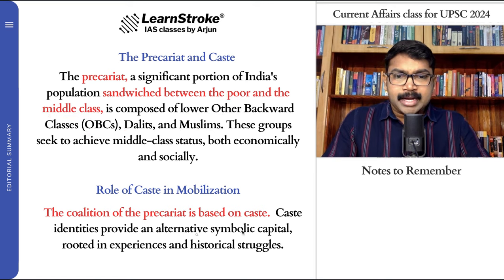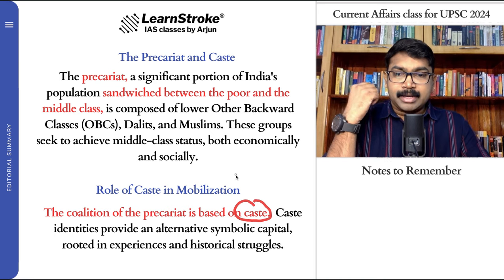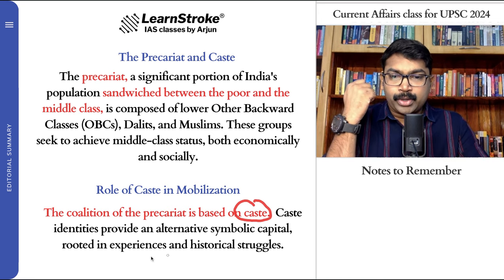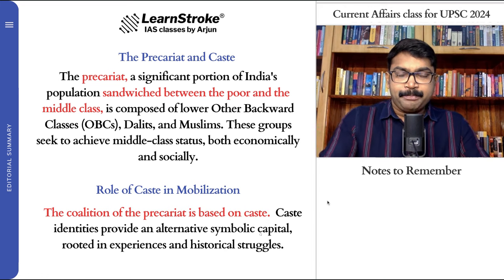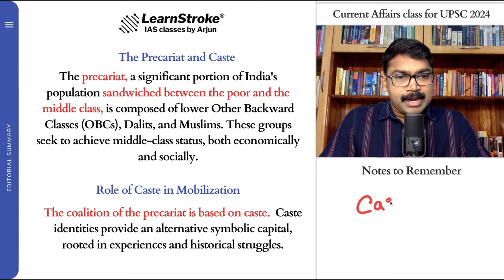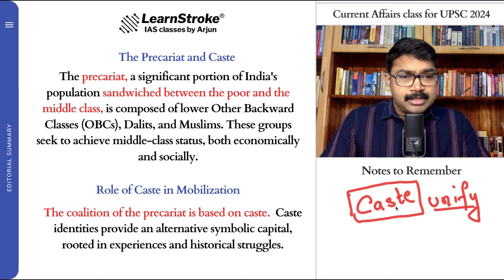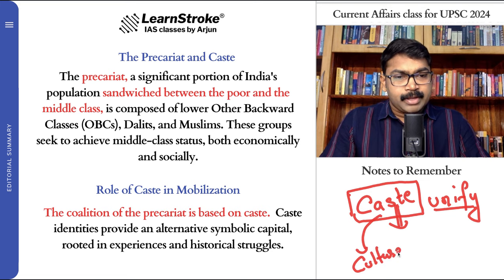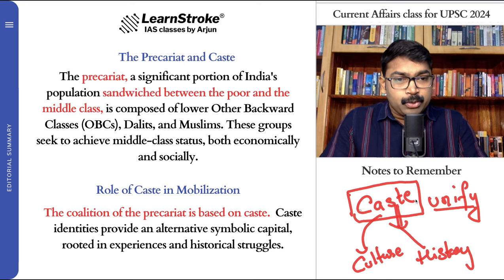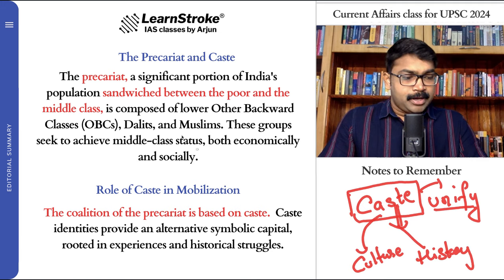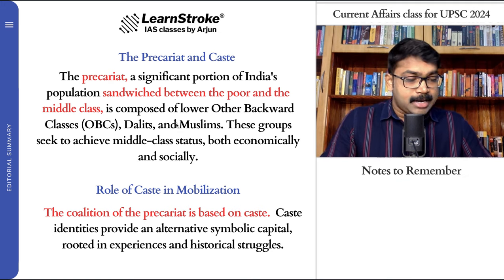The correlation of the precariat is based on caste. Now they are the people who need more development, because caste identities provide an alternative symbol — capital rooted in experience and historical struggles. Caste is the basis of how you unify people. Whether it is a good thing or bad thing, caste is one thing where you can unify people, because they have the same culture and historical background. Caste is often used to unify people, and we should remember the sections called the precariat.